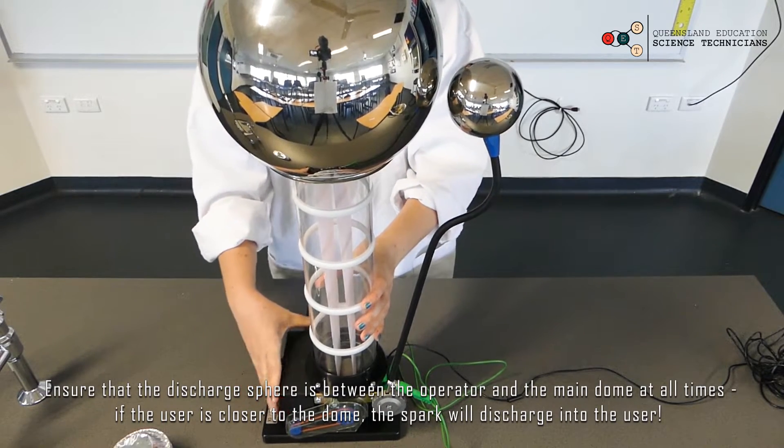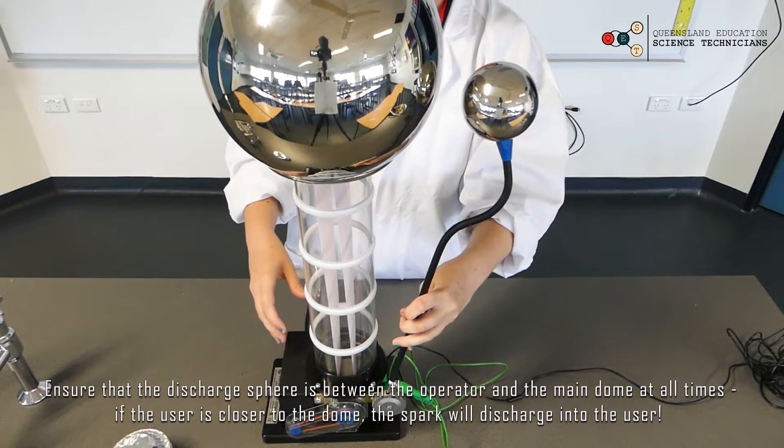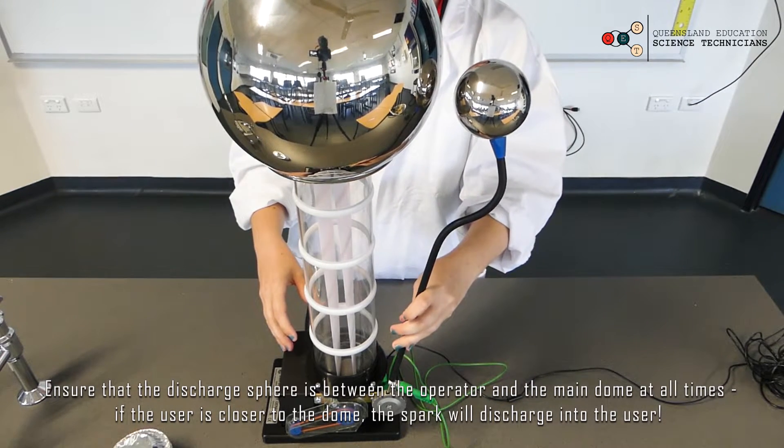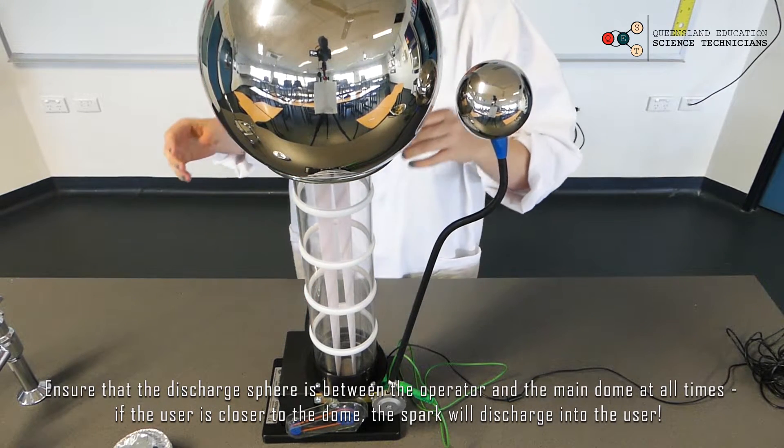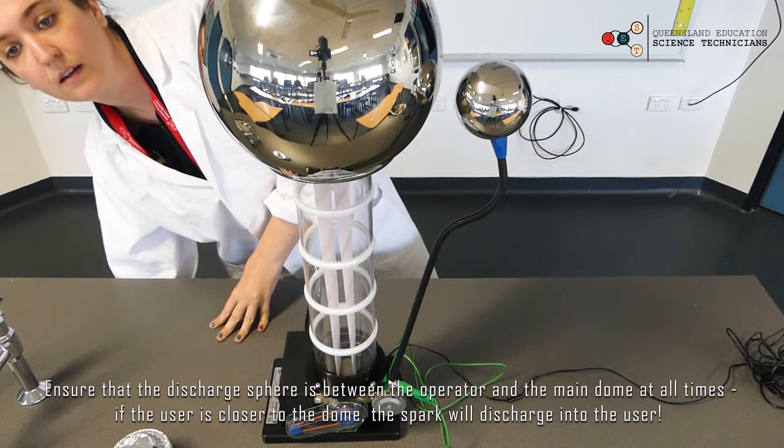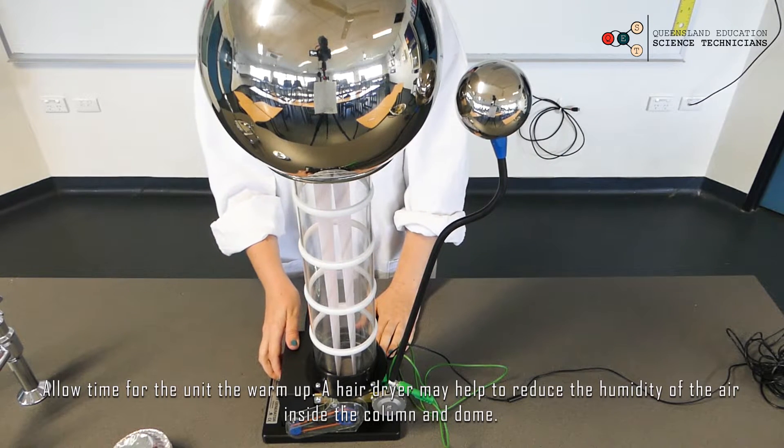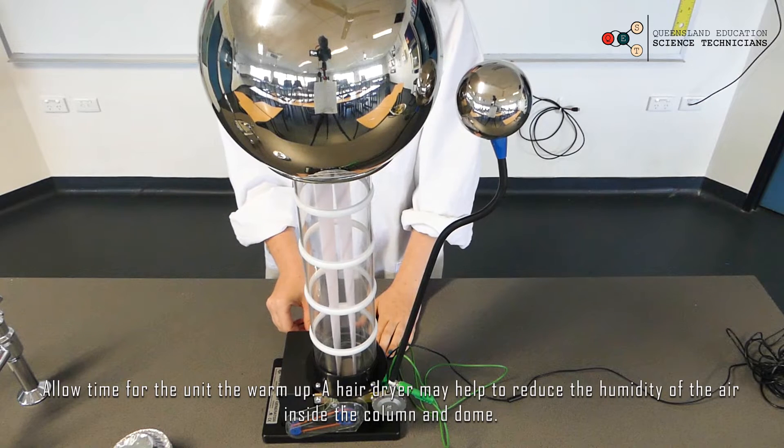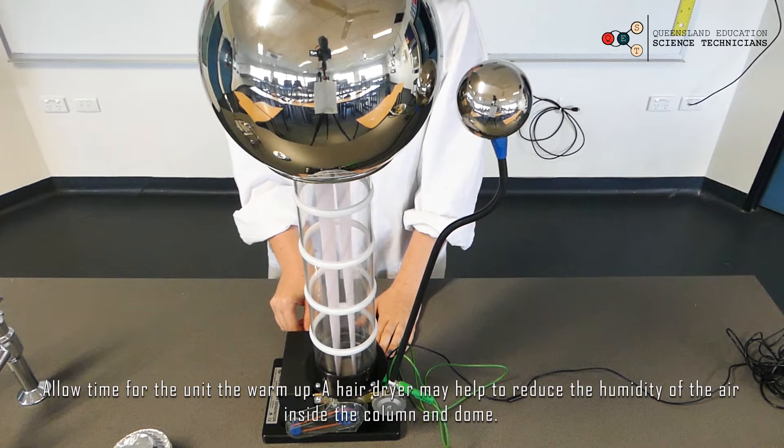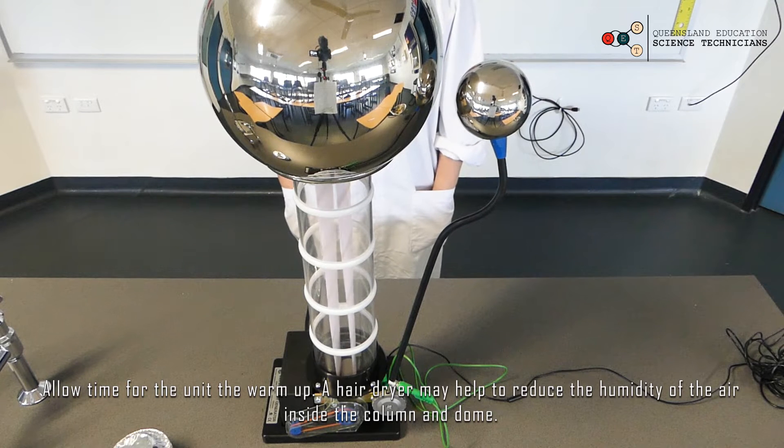So now just put your discharge sphere about 3cm away from the main dome, turn your Van de Graaff on at the wall and turn on the unit. Put the speed up as high as it will go and you'll start to see it sparking fairly quickly.